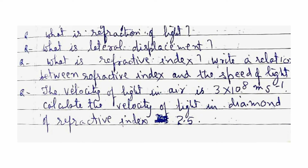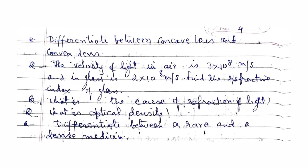What is refraction of light? What is lateral displacement? What is the refractive index? Write the relation between the refractive index and the speed of light. The velocity of light in vacuum is 3×10⁸ m/s — calculate the velocity of light in diamond with refractive index 2.5.